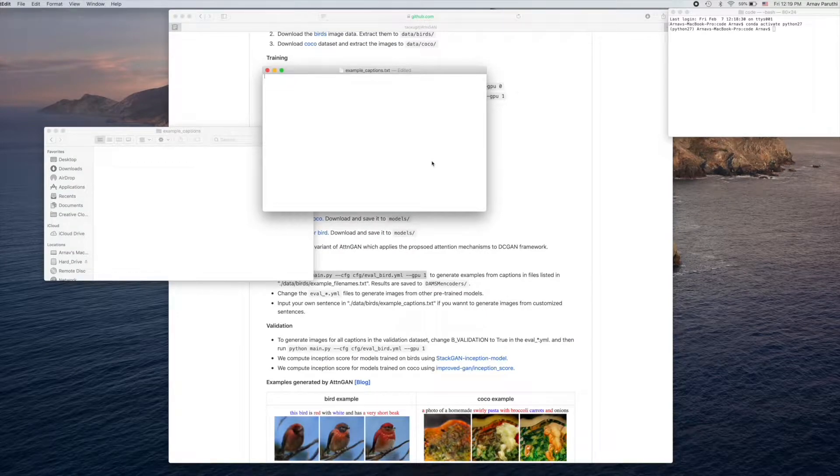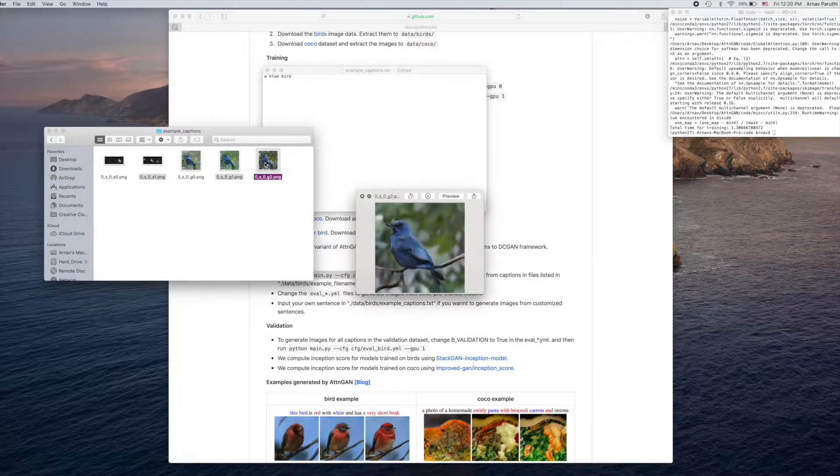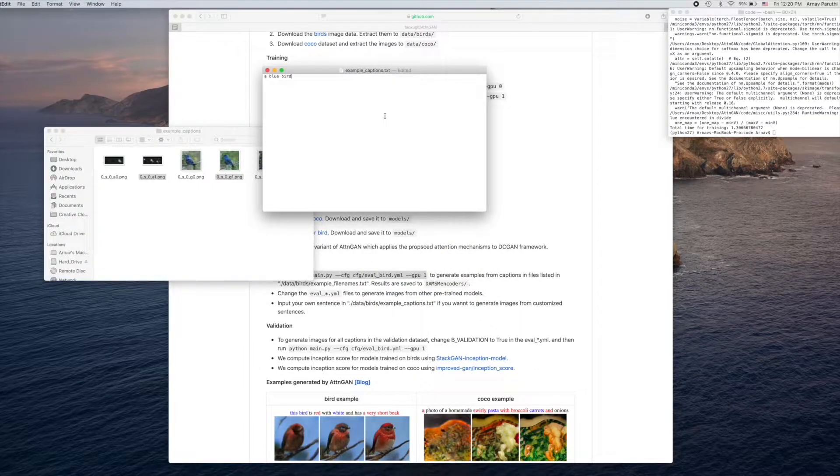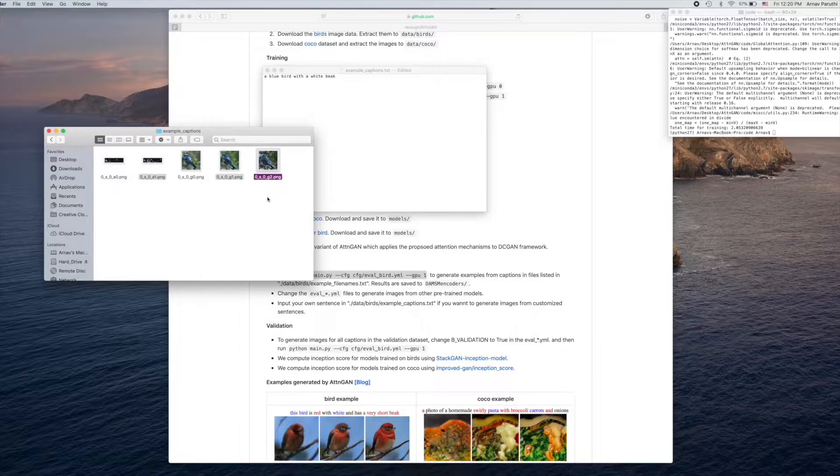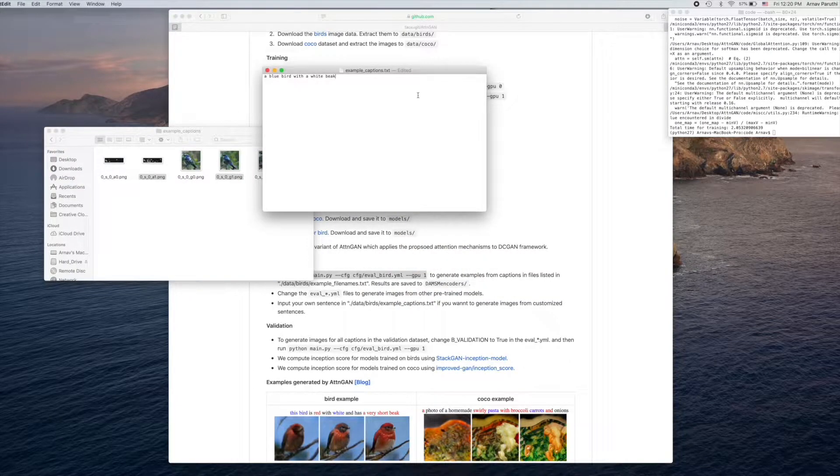Okay, so how good is this algorithm? Let's try a blue bird. Okay, not bad. A blue bird with a white beak. It's okay. Interesting.